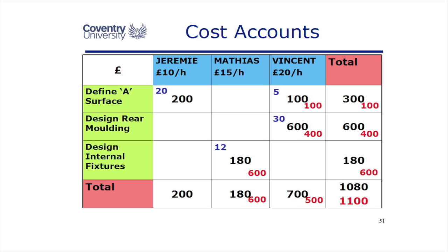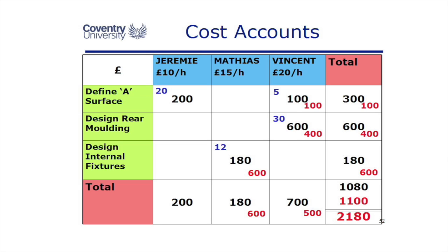We're building up a cost account based on work estimates and cost estimates, and when we get an estimate we need to say 'how do you know?' This is the total cost for the project — for these three tasks, we've built up a total of £2,180. We know where the money is being spent and which person is spending it. We can total by person and by task. It's a team effort — we get the team to discuss and estimate the hours of effort and costs, and build up the total cost for the project.